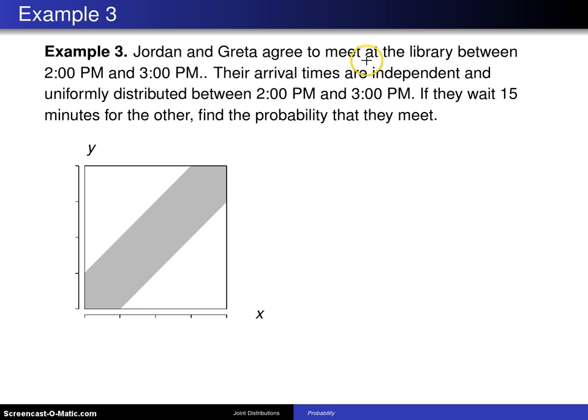Jordan and Greta agree to meet at the library between 2 p.m. and 3 p.m. Their arrival times are independent and uniformly distributed between 2 p.m. and 3 p.m. If they wait 15 minutes for the other, find the probability that they meet.